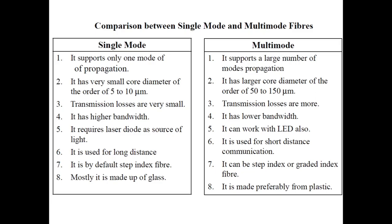Comparing single mode and multimode optical fiber: single mode fiber supports only one mode but multimode fiber supports a large number of modes. Single mode has a very small core diameter while multimode has a large core diameter. Transmission losses — attenuation — are very less for single mode but more for multimode. Single mode optical fiber is used for long distance communication while multimode is used for short distance communication.